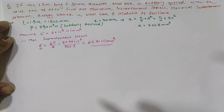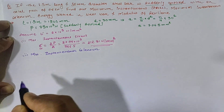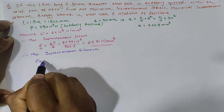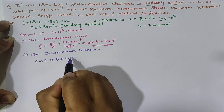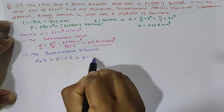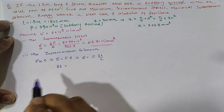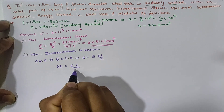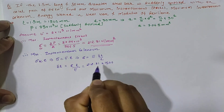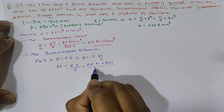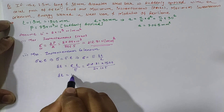Now for the calculation of maximum extension. We know that stress is directly proportional to strain, hence sigma equals capital E into small e, where small e is delta L by L. So sigma equals E into delta L by L, and delta L equals sigma into L divided by E. Substituting sigma as 212.31, length as 1500 mm, and E as 2 into 10 raised to 5, our maximum instantaneous extension delta L equals 1.59 mm.